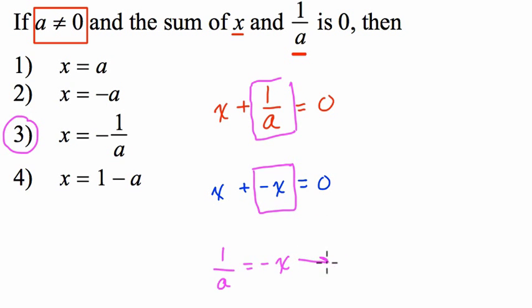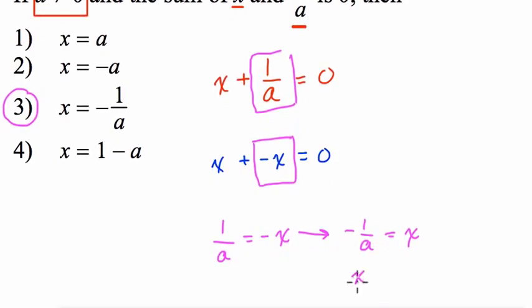Well, if I multiply both sides of my equation by negative 1, what happens? 1 over a times negative 1 is negative 1 over a. And then negative x times negative 1 is just x. And notice that now it's looking closer to choice 3. I can change sides here in this equation. That's called the symmetric property. So x equals negative 1 over a. That's equivalent. I can swap those sides.